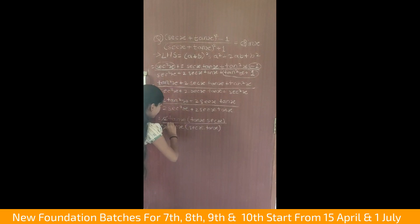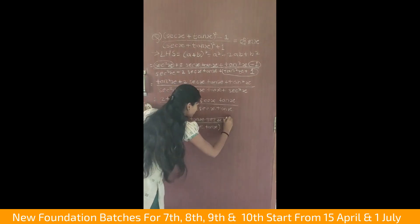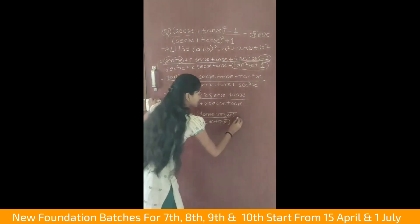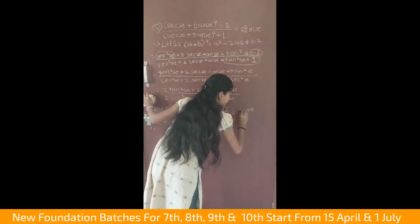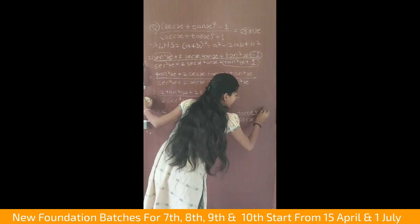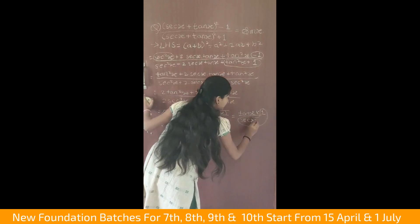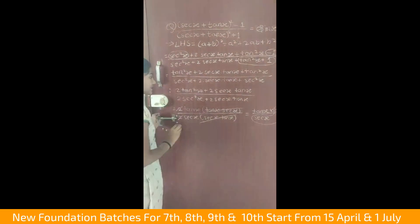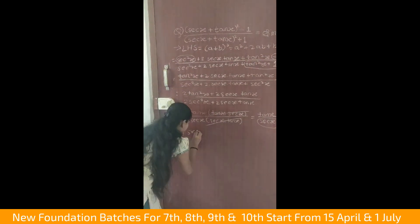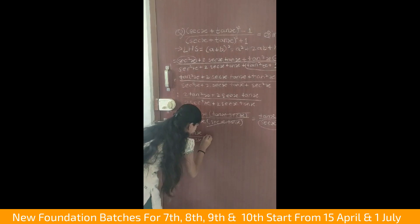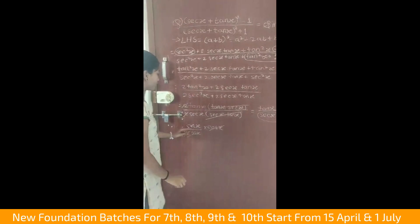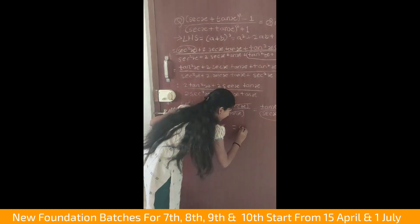Now 2 and 2 will be cancelled, tan x into sec x and sec x into tan x will be cancelled, is equal to tan x upon sec x. Now here we will write into 1. Now 1 upon sec x we can write it as cos x, and tan x we will write as sin x upon cos x. Into cos x, and cos x will be cancelled, therefore our answer is sin x.